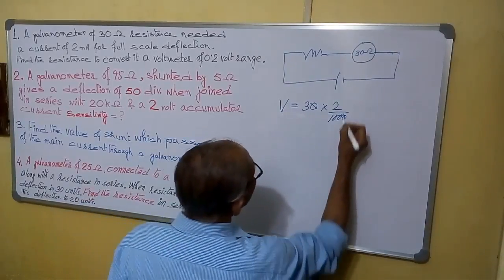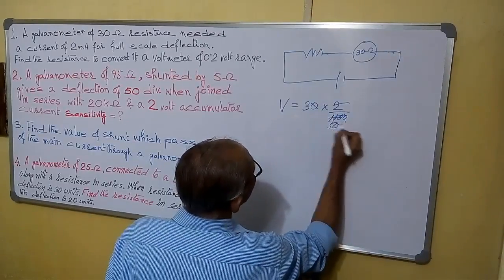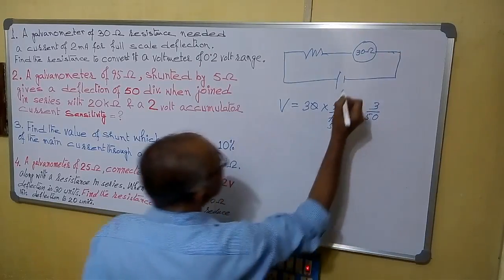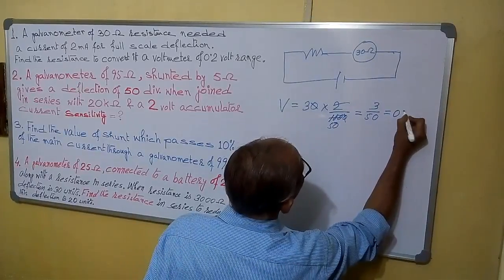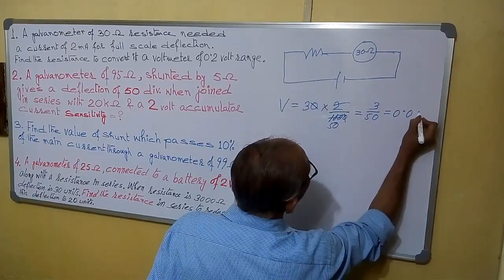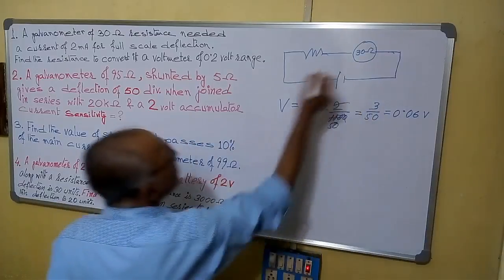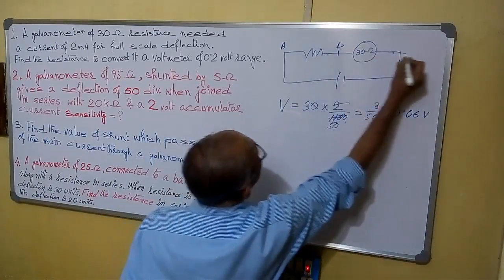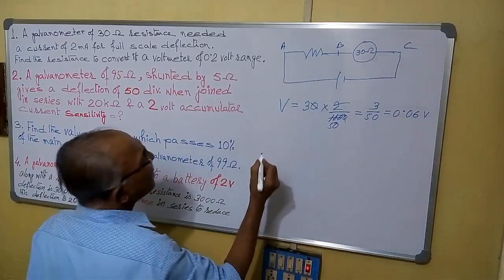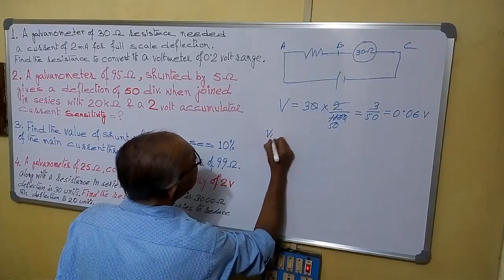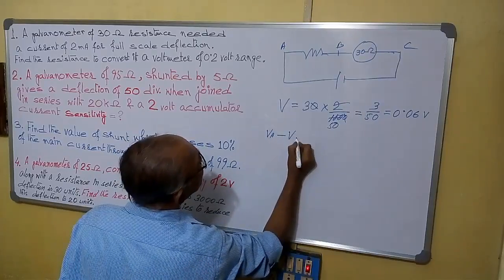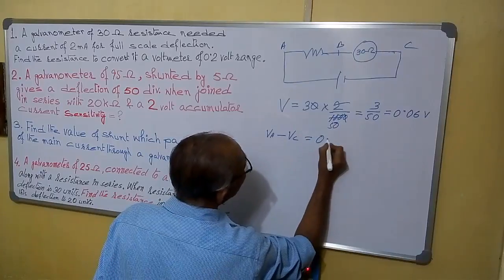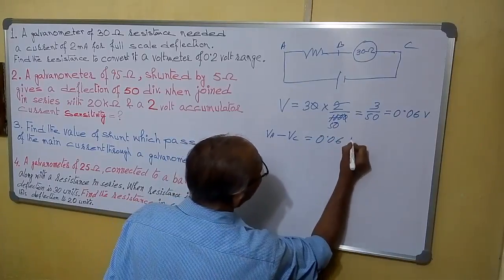This is the relation. Suppose we are giving a name A, B, C. So what we can see: when this resistance is not there, VB minus VC equals to 0.06 volt.